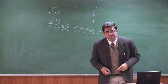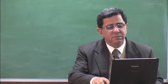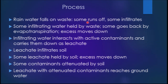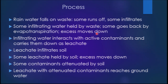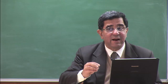To summarize the process: rain water falls on waste, some runs off, some infiltrates. Some infiltrating water is held by the waste, some goes back by evapotranspiration. Excess water moves down and interacts with active contaminants, carrying them as leachate. Leachate infiltrates the soil; some is held, excess moves down. Some contaminants are attenuated by the soil — the concept of a rapid sand filter: the net negative charge of clay particles holds back Ca²⁺ ions. This is called attenuation or retardation.